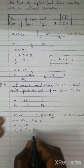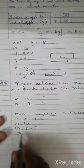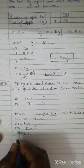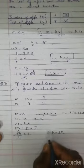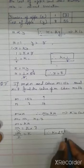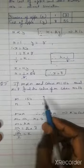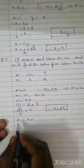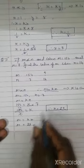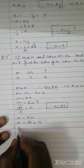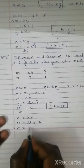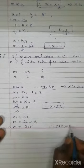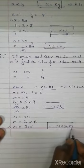Dividing 154 by 7 gives us k equals 22. Now to find m when n is 14, we use the same formula m equals kn. k is 22 and n is 14, so m equals 22 multiplied by 14. Therefore m equals 308. That is our answer.